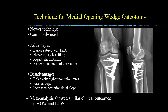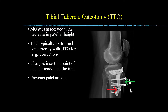Demonstrated on this slide are AP and lateral radiographs of a status post-healed uncomplicated medial opening wedge HTO. Bone graft material at the site of the osteotomy is fully incorporated. The plate and screw fixation securing the osteotomy is intact. An additional anteriorly positioned screw secures a concurrent tibial tubercle osteotomy. The altered anatomy created by a medial opening wedge HTO can result in patellar baja. Due to this, TTO is typically performed concurrently with a medial opening wedge HTO for large corrections.